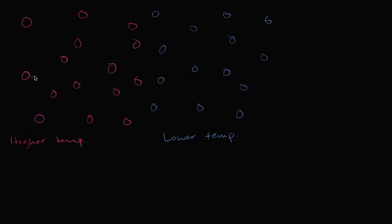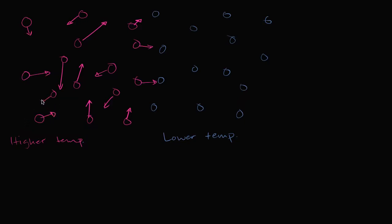Let me depict each of these individual molecules' kinetic energy. Maybe this one is doing that, maybe this one is doing that, maybe this one is going in this direction, and that one is going in that direction. They all have different directions and the magnitude of their velocity can be different — they all might have different speeds.